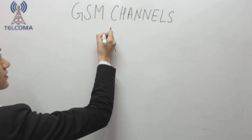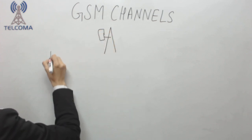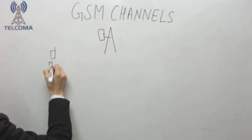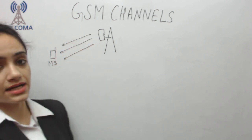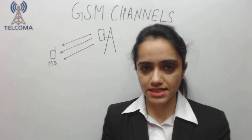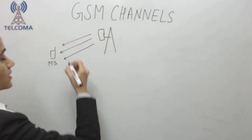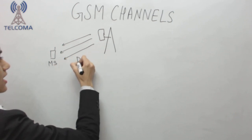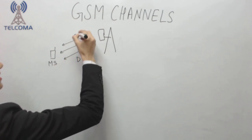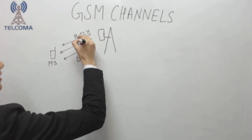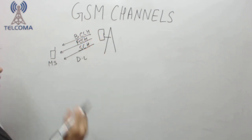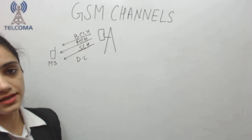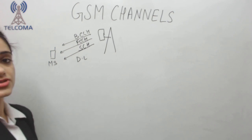From the network to the mobile station, we always have a list of broadcast channels. That means our antenna is always radiating these channels, which is why we call them broadcast channels. The direction of these channels is downlink. The channels in the downlink direction are BCCH, FCCH, and SCH, which are always radiated on the air interface.